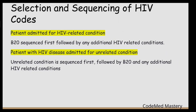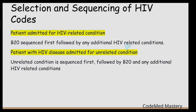The next guideline covers selection and sequencing of HIV codes. When a patient is admitted for an HIV-related condition, we sequence B20 first, followed by any additional HIV-related conditions. When a patient with HIV disease is admitted for an unrelated condition, the unrelated condition must be sequenced first, followed by B20 and any additional HIV-related conditions.